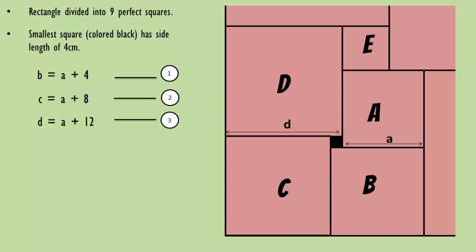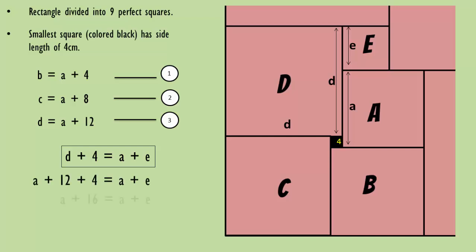But we can also directly compare D with A as shown. So D plus 4 is equal to A plus E. From equation 3, we have D equals A plus 12, so we get the value of E and that's 16 centimeters.